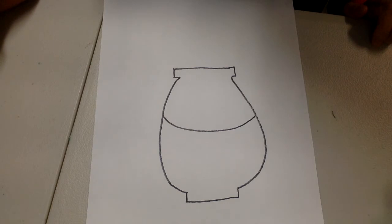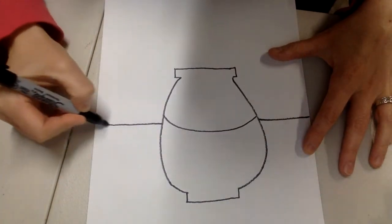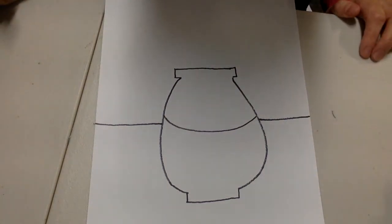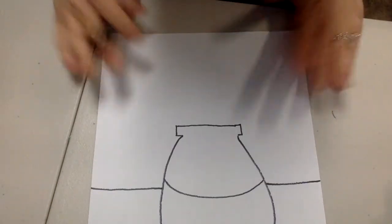All right, we are going to go ahead and make the line for our table. All right, that's called overlapping. Remember, the vase is blocking part of the table. One thing is covering up something else.